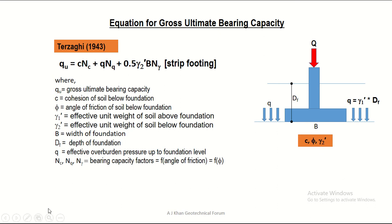On the right-hand side we have a schematic of a strip footing showing only B, since the length is large in dimension compared to B. The foundation is located at depth Df from the ground level, and the surcharge of the backfill is Q at the foundation level. The soil properties below the foundation level are: cohesion C and angle of friction phi. The unit weight of the subsoil below the footing level is denoted gamma 2 prime. Note that two notations for gamma are used — one above and one below the foundation level.